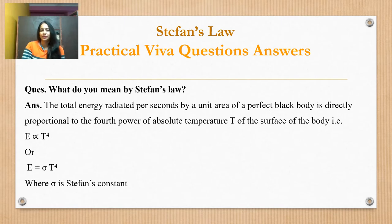Or, E equals sigma times T to the power 4. Where sigma is Stefan's constant. This is the expression for a perfectly black body.